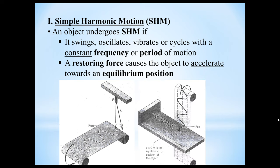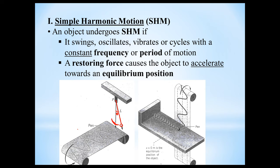The two most common examples we're going to look at are a pendulum-Earth system and a mass-spring system. Both of these systems undergo simple harmonic motion. Let's start off with the pendulum system. We have a fulcrum point and the pendulum bob down here. If I release this at some angle theta to the vertical, it would swing back and forth repeatedly.